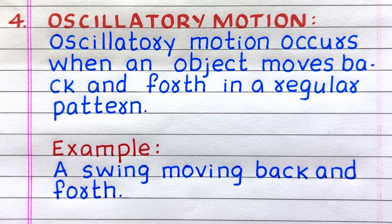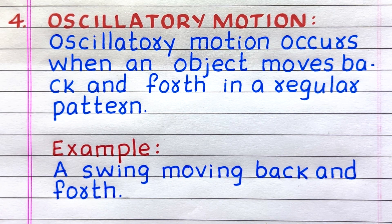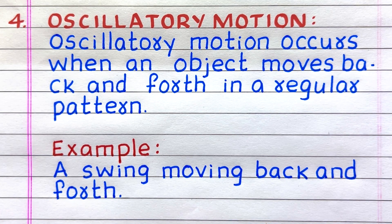Fourth type of motion is oscillatory motion. Oscillatory motion occurs when an object moves back and forth in a regular pattern. Example: a swing moving back and forth.